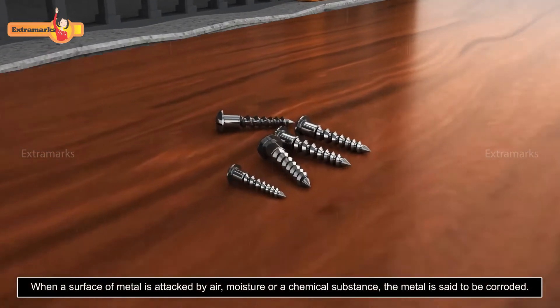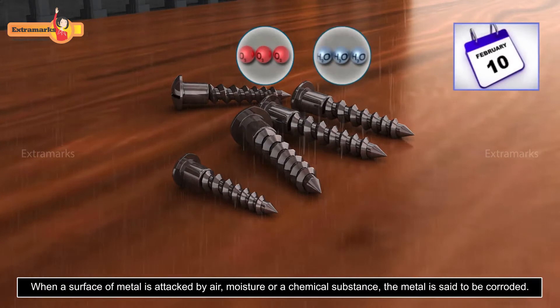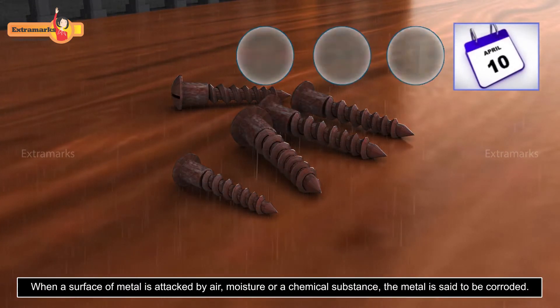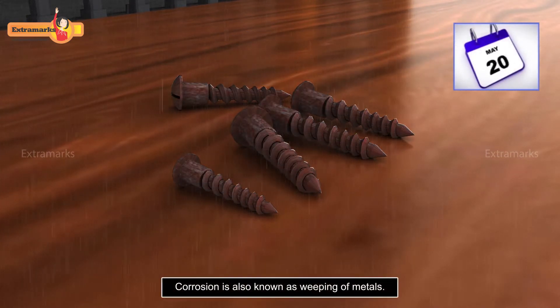When a surface of metal is attacked by air, moisture, or a chemical substance, the metal is said to be corroded. This phenomenon is known as corrosion or weeping of metal.